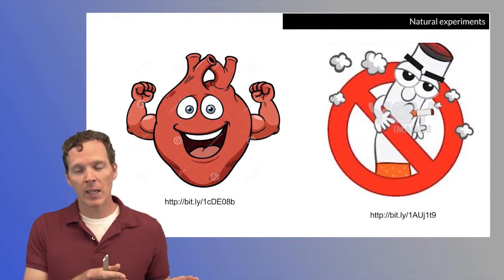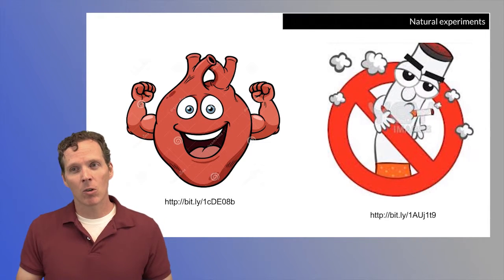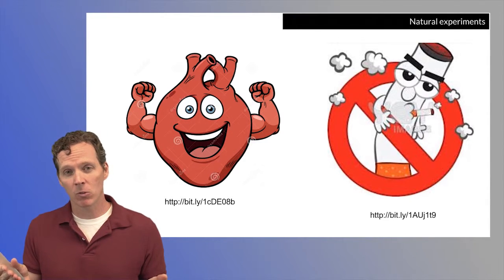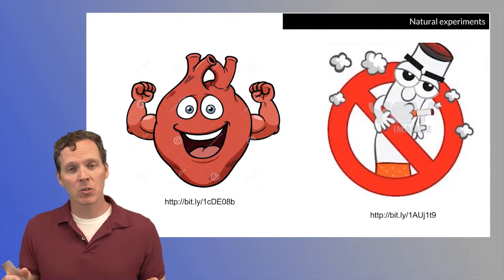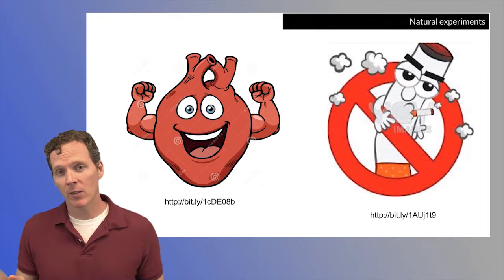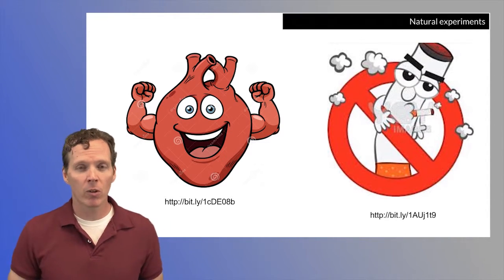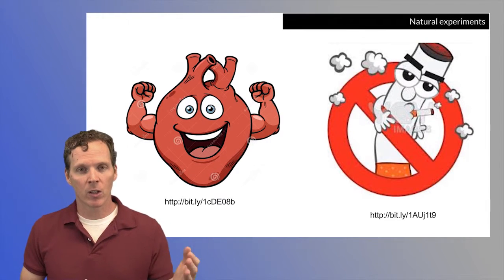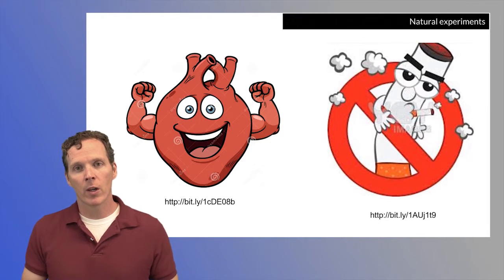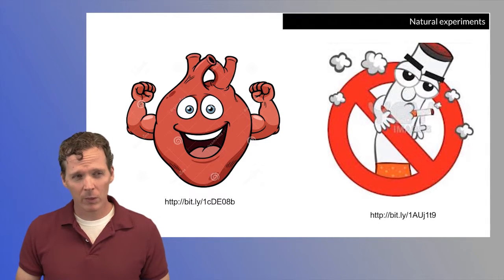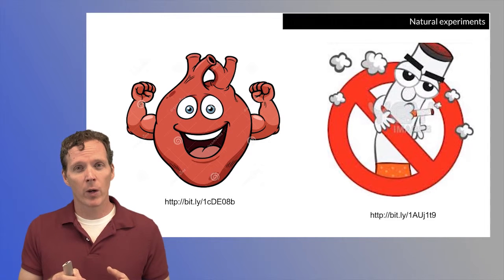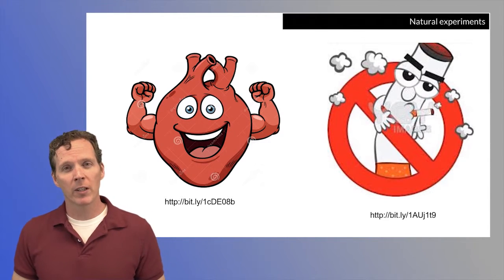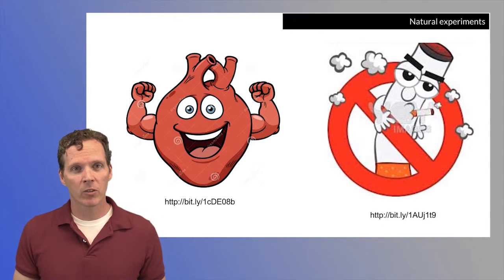If in the same election cycle where the smoking ban was passed that broadly impacted people's smoking behaviors, that same election cycle had other policies that also impacted things, those other policies would also be associated with whatever decline in cardiac issues that you saw from your hospital records. Natural experiments — something where some external manipulation like a ban going into effect — are another way you can try to get at causality.